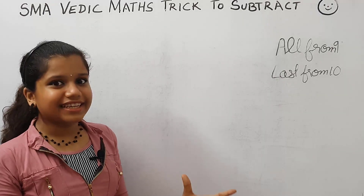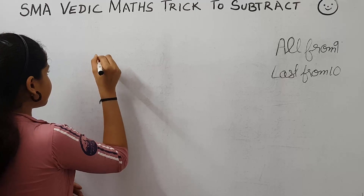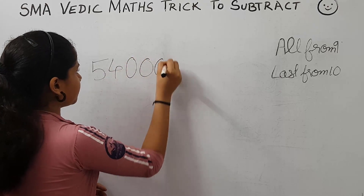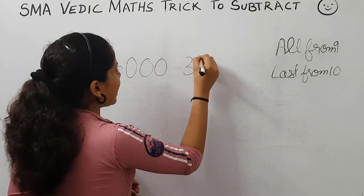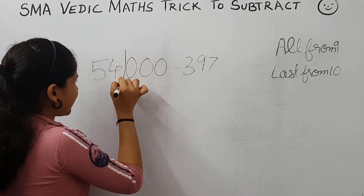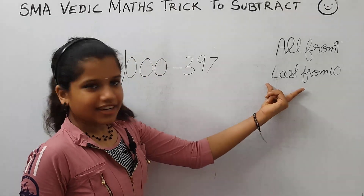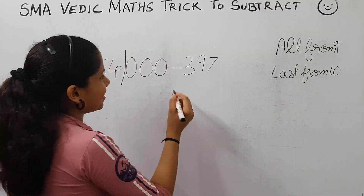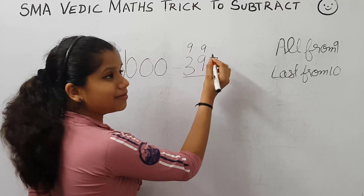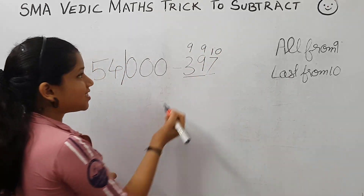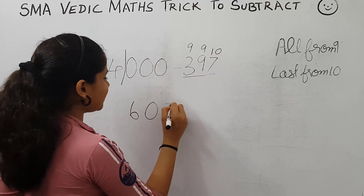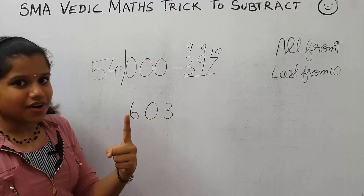Now let's take a bigger number: 54,000 minus 397. Here there are three zeros and three digits. We put a slash here and apply the rule: all from 9 and last from 10. 9 minus 3 is 6, 9 minus 9 is 0, 10 minus 7 is 3. Then 54 minus 1 is 53. The answer is 53,603.